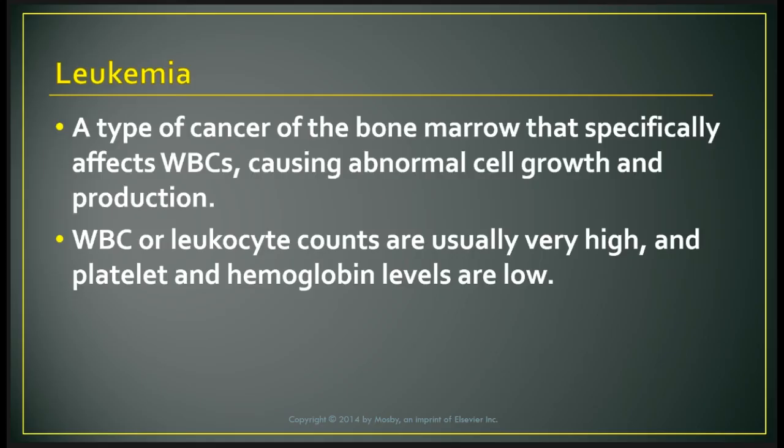We're going to first cover leukemia. This particular cancer occurs in all age groups. It is when there is an accumulation of dysfunctional cells due to loss of regulation and cell division. This type of cancer is fatal if untreated. The cells have lost their ability to differentiate into white blood cells, red blood cells, and platelets.